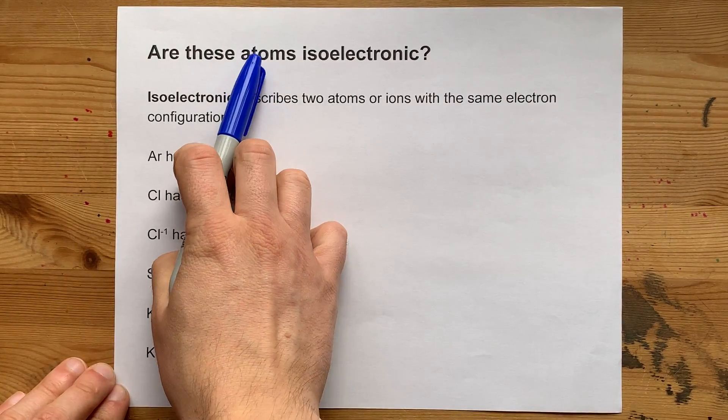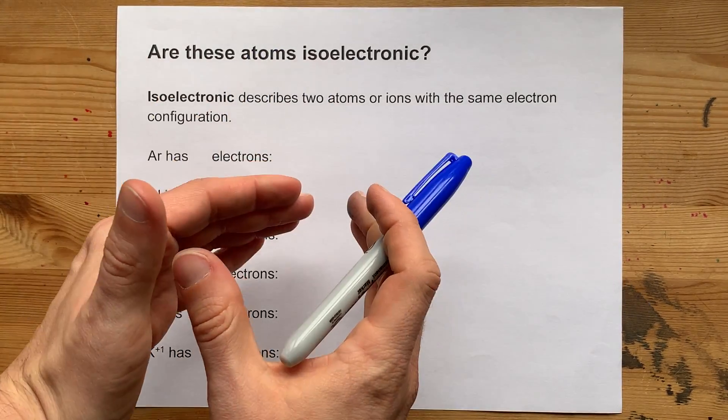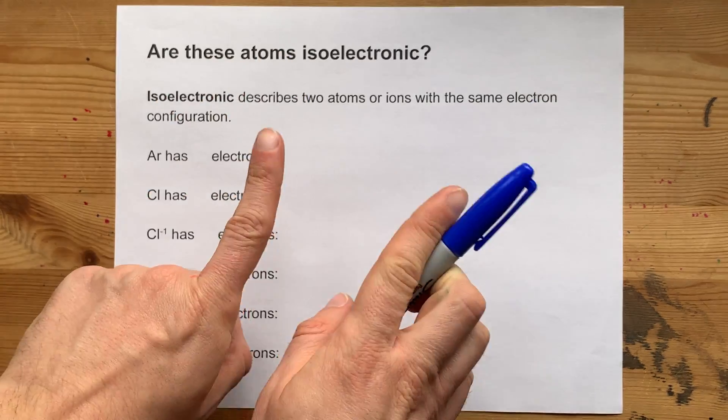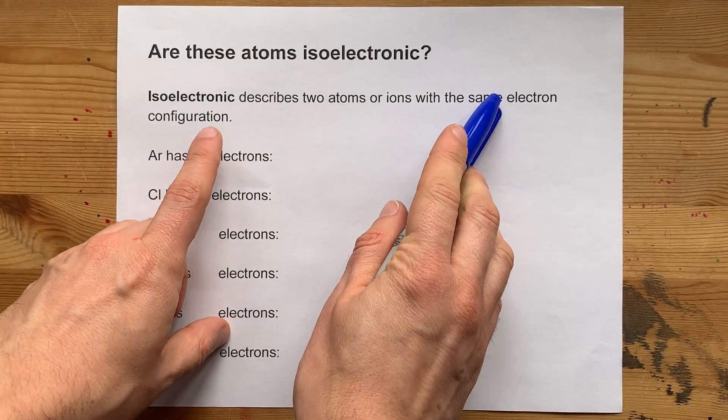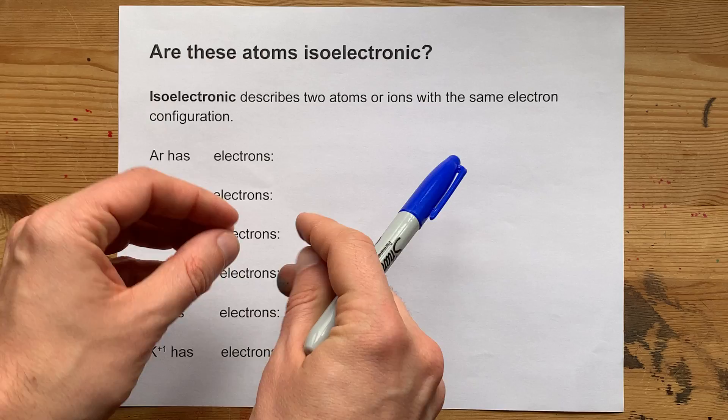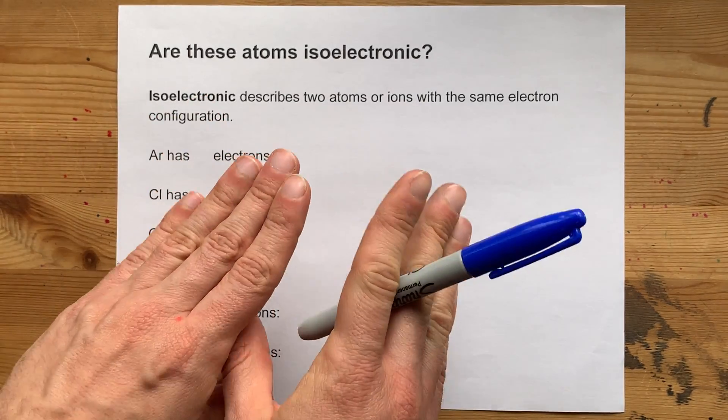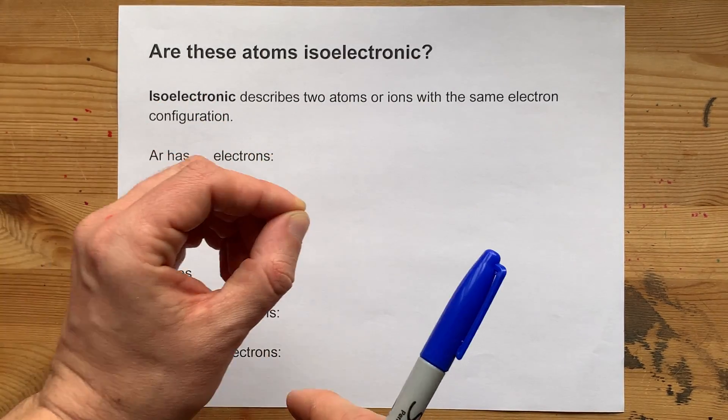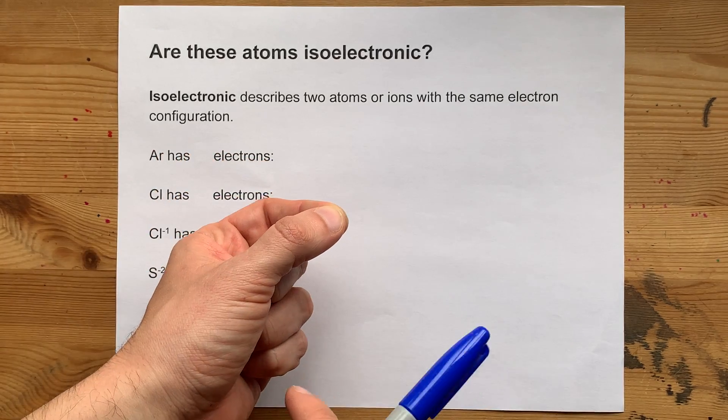What does it mean for atoms or ions to be isoelectronic? The answer is it has to have the same electron configuration, which really just comes down to having the same number of electrons.